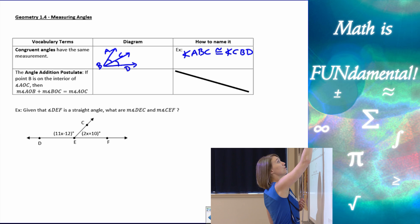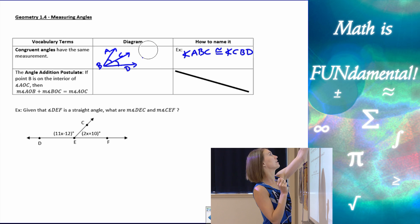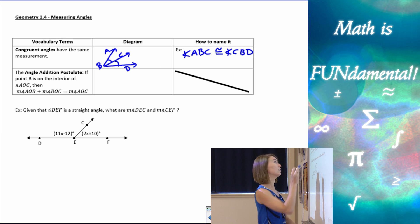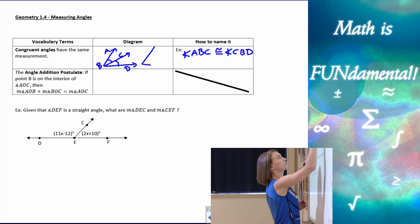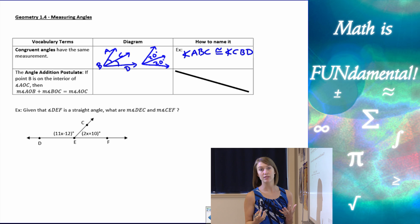We might also be given two angles like this. Let me draw this a little differently here, make it a little bigger. Let's say that they were both 20 degrees, 20 degrees. We know that those angles would be congruent because they have the same measure.